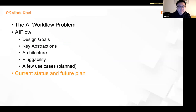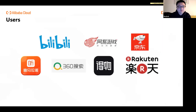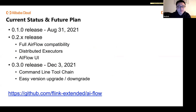Regarding current status and future plans: AI Flow already has users in production, including Bilibili and other Chinese and Japanese companies. The first release was August 31st of this year. A month later, version 0.2 was released with full Airflow compatibility support, distributed executors, and an AI Flow UI. Version 0.3 is planned for release this week, adding a command-line toolchain and seamless version upgrade and downgrade capability.